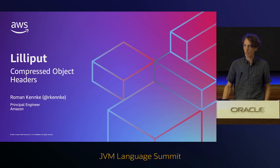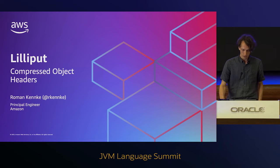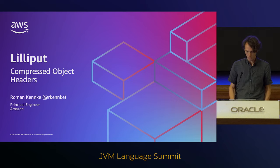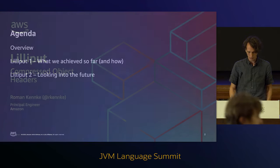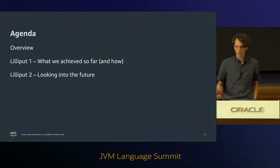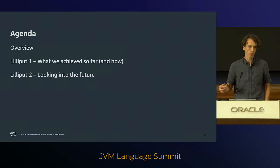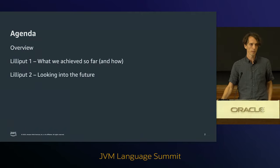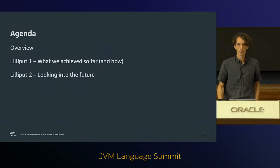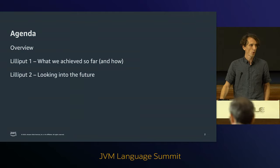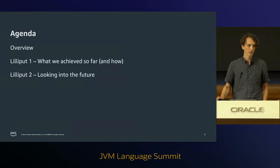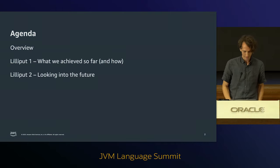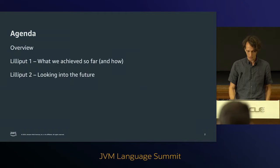My name is Roman. I'm going to talk about Project Lilliput, which is about compressing object headers and therefore reducing the memory footprint. I want to divide this into two parts: in the first part I'll talk about what we've achieved so far with Lilliput 1, and in the second part I'll look at the future, discussing ideas we have and maybe planting some problems in your heads so that some of you can find ways to solve them.